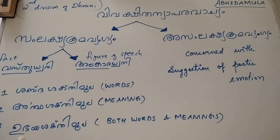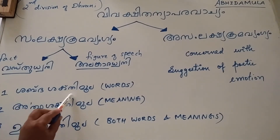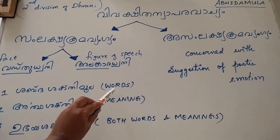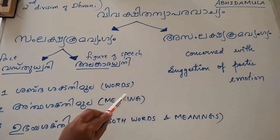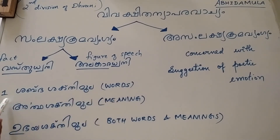There is yet another way of classifying Samlakshya Krama Vangya. It is based on what is important. First, Sabda Shakti Mula — this classification is based on words. If words are important in creating the suggested meaning, and if we have reached a particular intended suggested sense just because of the use of a precise word, and the use of that particular word is highly crucial, then we call it Sabda Shakti Mula.